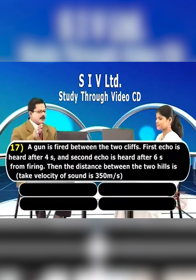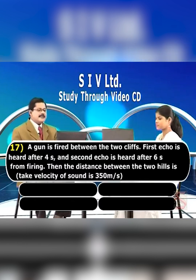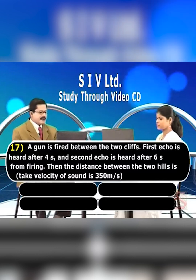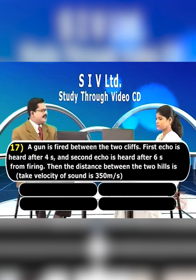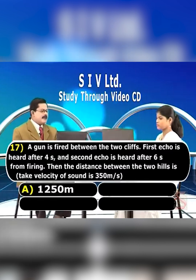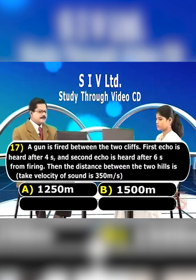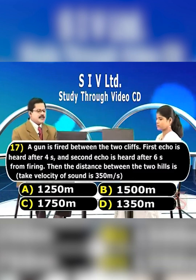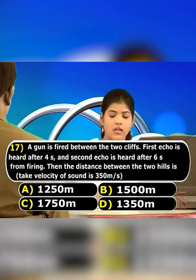A gun is fired between two cliffs. The first echo is heard after four seconds and the second echo is heard after six seconds from firing. The velocity of sound is 350 meters per second. The options are: option A, 1250 meters; option B, 1500 meters; option C, 1750 meters; and option D, 1350 meters. What is the distance between the two hills?